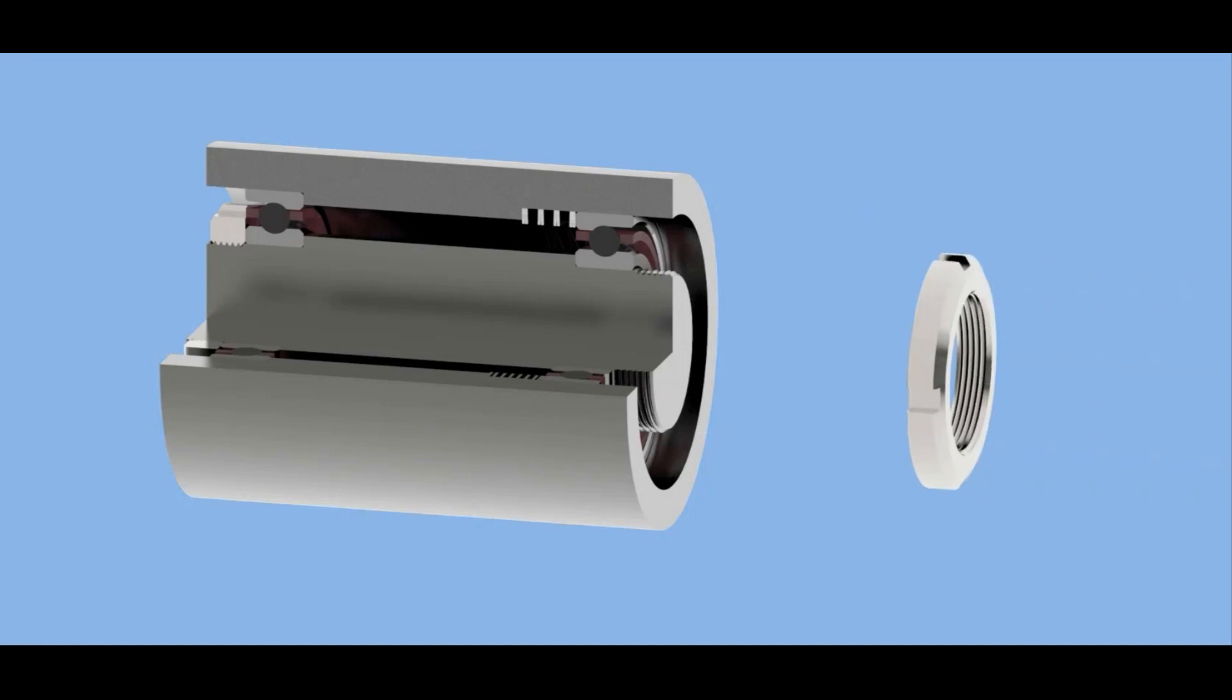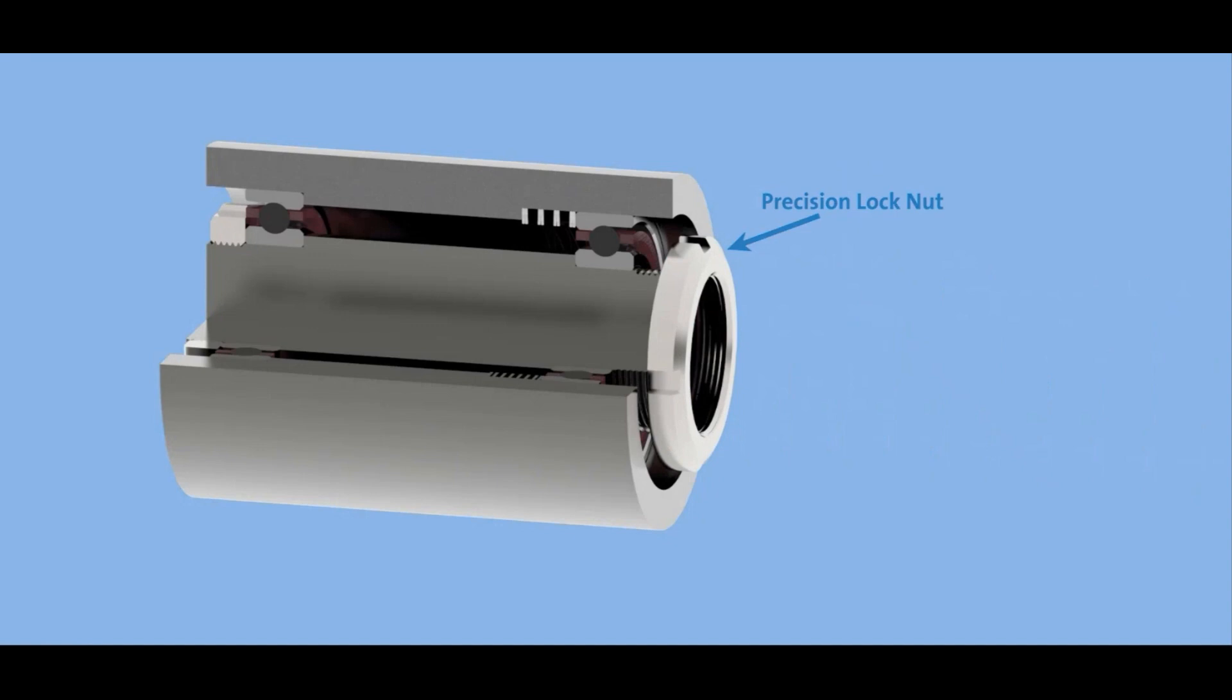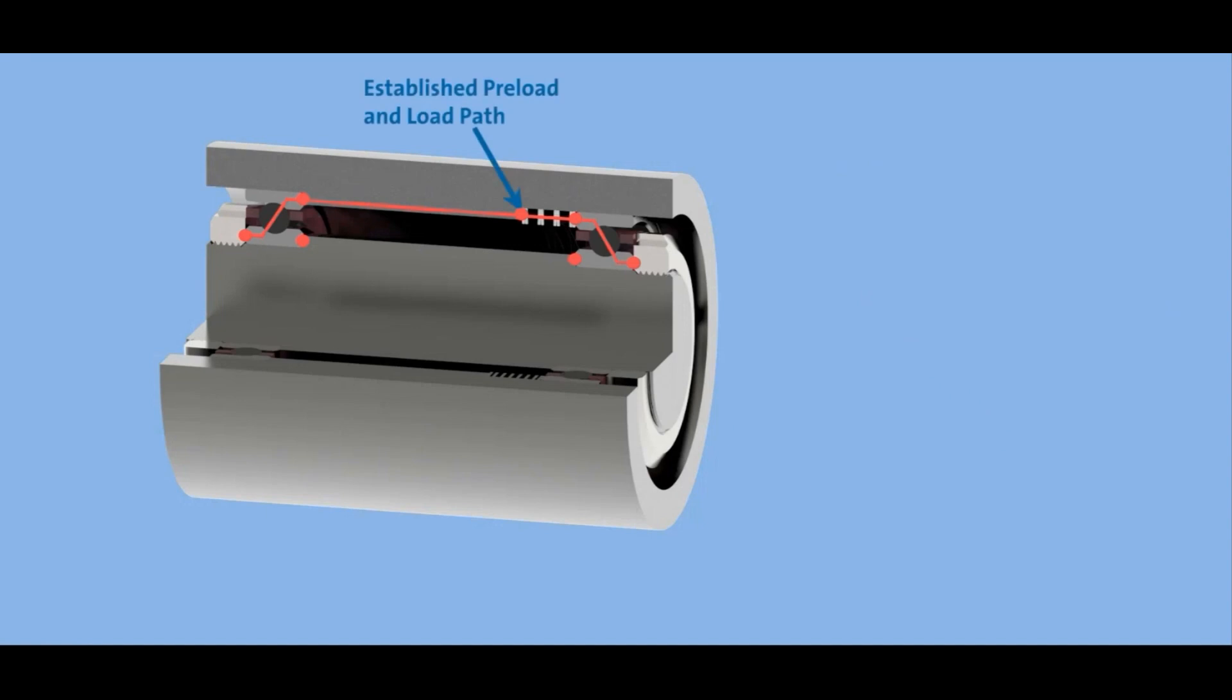And then that precision lock nut can come back in, gets tightened down firmly. Now we have our load path established for our spring preloaded simple back-to-back bearing assembly.